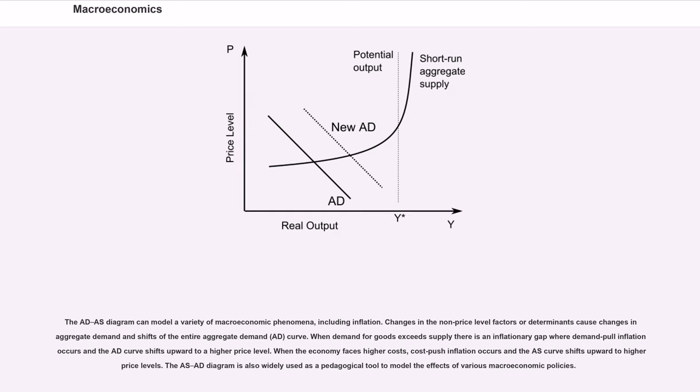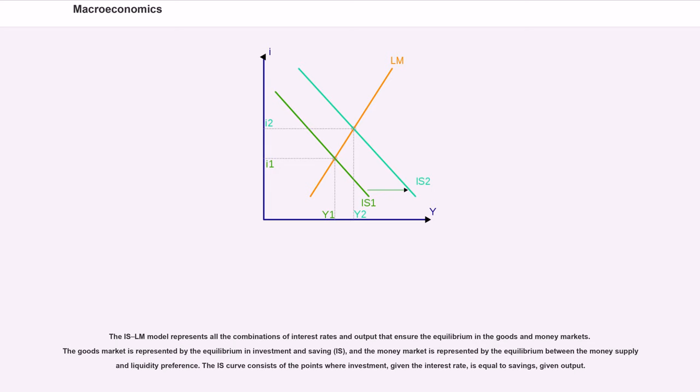The IS-LM model is also widely used as a pedagogical tool to model the effects of various macroeconomic policies. The IS-LM model represents all the combinations of interest rates and output that ensure the equilibrium in the goods and money markets. The goods market is represented by the equilibrium in investment and saving (IS), and the money market is represented by the equilibrium between the money supply and liquidity preference.